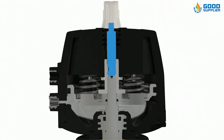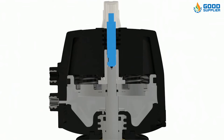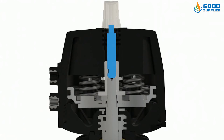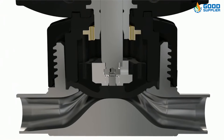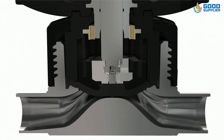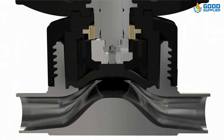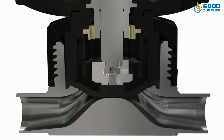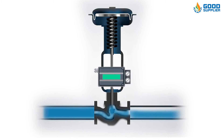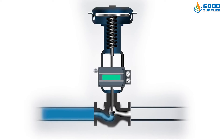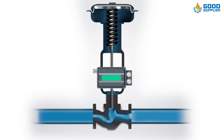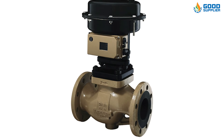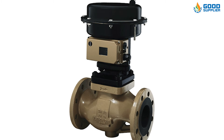The straight-through diaphragm valves require a more flexible diaphragm than the weir type. Due to this, the construction material for this type of valve is restricted to elastomers. This diaphragm has high flexibility and a large area. Straight-through diaphragm valves are available with full bore and reduced bore flow packages.